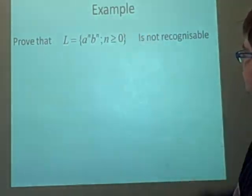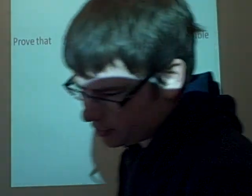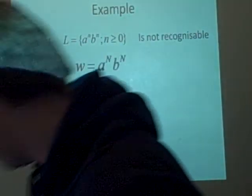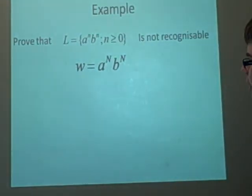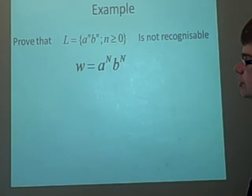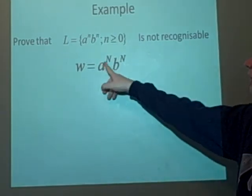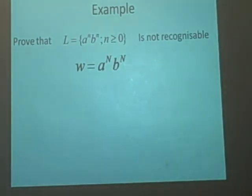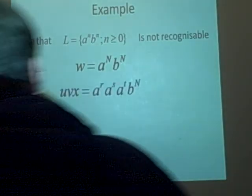Right, so now I want to prove that this is not recognizable. First one's an example. Big N's good, so we'll have a to the big N, b to the big N, and the size of this, as you can see, is 2N. We've got N of these and N of these.